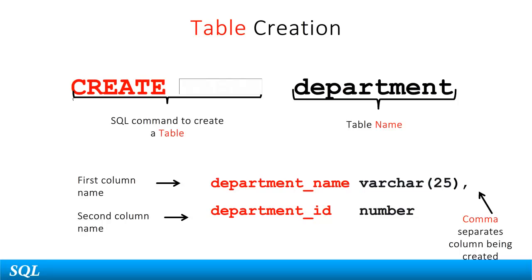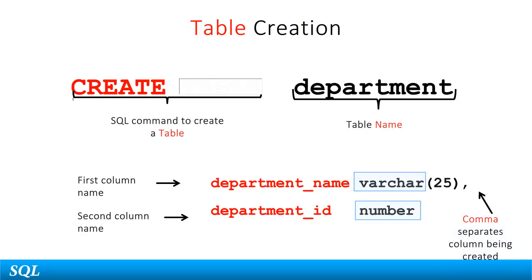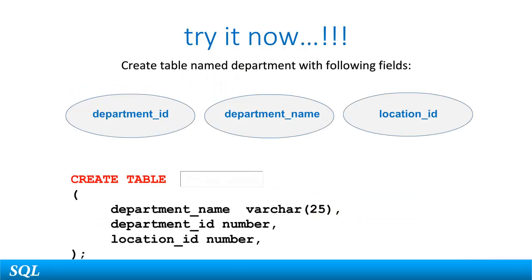The first column is of type VARCHAR, which is like a string, and the other is a NUMBER which can store integers. The maximum size of the department column is specified as 25, meaning it can store up to 25 characters. Each column is separated from the other by a comma. Don't worry about VARCHAR or NUMBER — we will look at these in more detail when we study data types. Type in the command for creating the table, and also add a third column called location_id of type NUMBER. Note that the column declarations are enclosed in round parentheses and the individual column names are separated with commas.